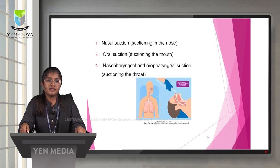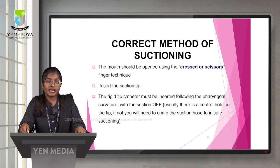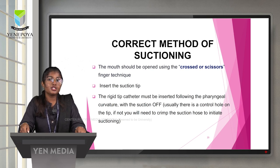Nasal suction refers to suctioning in the nose; oral suction refers to suctioning the mouth; nasopharyngeal and oropharyngeal suction refers to suctioning the throat. For the current method of suctioning, the mouth should be opened using the crossed or scissors finger technique. Insert the suction tip; the rigid tip catheter must be inserted following the pharyngeal curvature with the suction off. Usually there is a control hole on the tip; if not, crimp the suction hose to initiate suctioning.